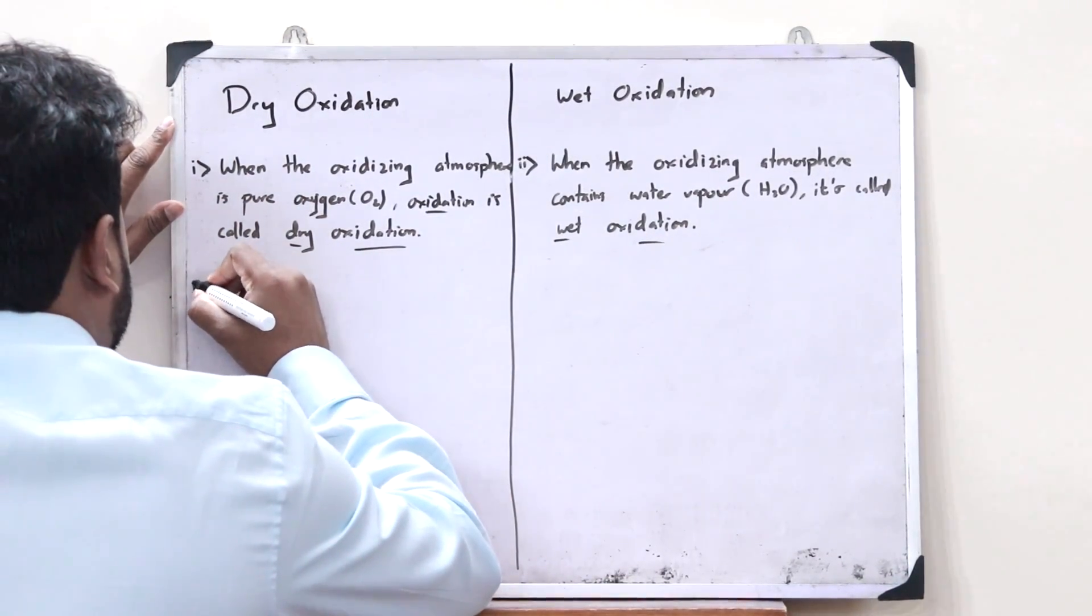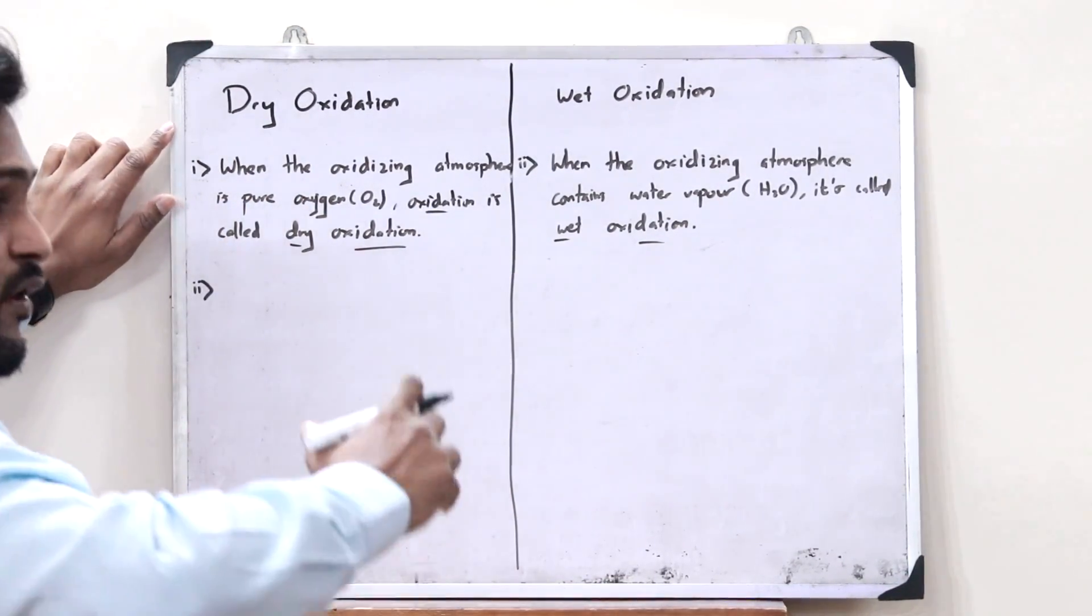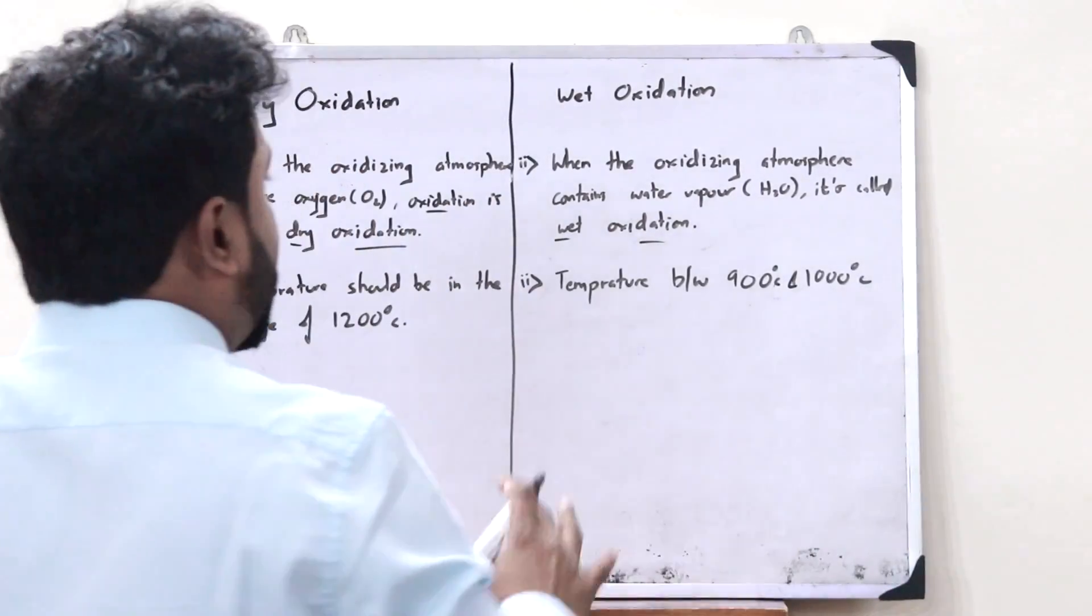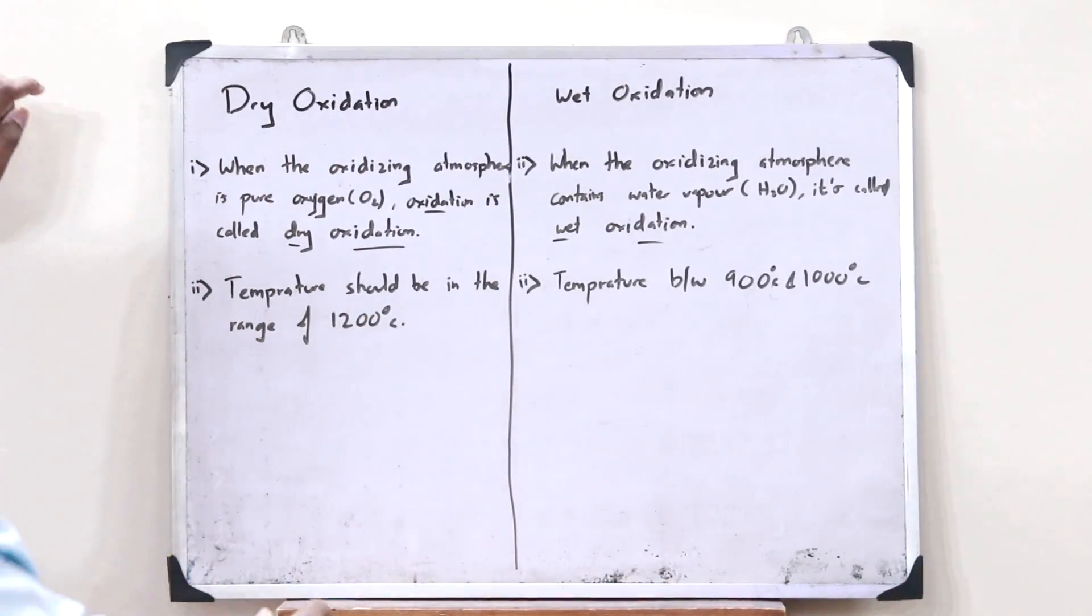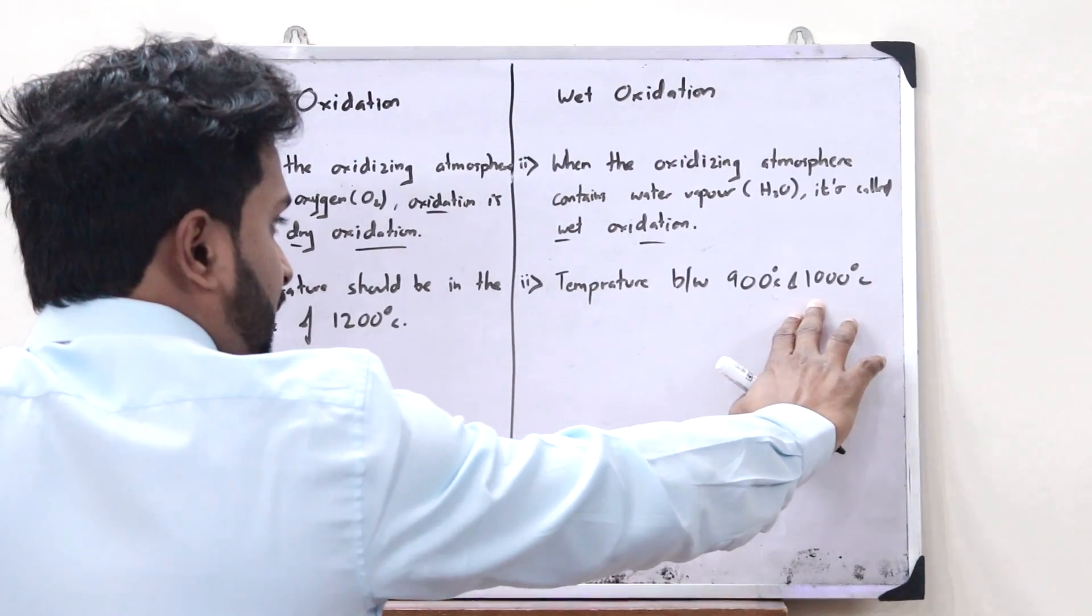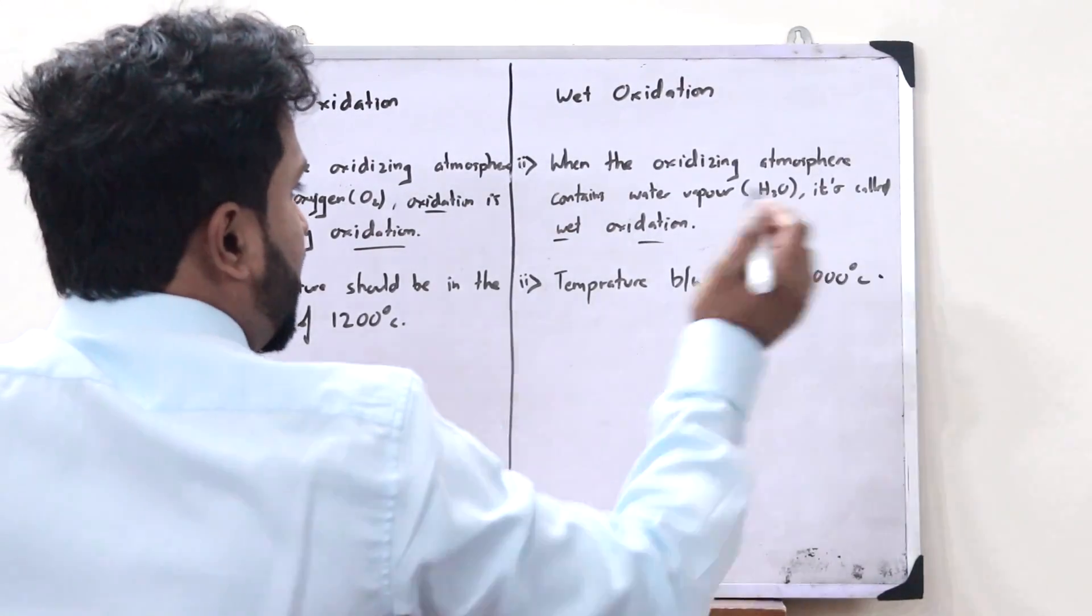In the case of dry oxidation, the temperature must be in the range of 1200 degrees Celsius. But in the case of wet oxidation, the temperature must be between 900 degrees Celsius and 1000 degrees Celsius.